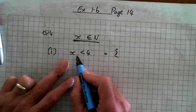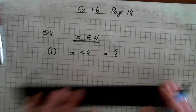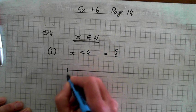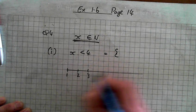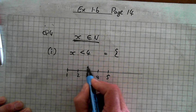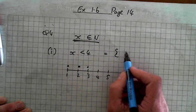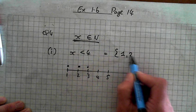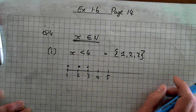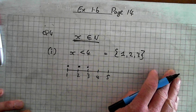We could draw it: 1, 2, 3, 4, 5. What are the answers? X is less than 4. Here's another way of writing the answers: 1, 2, 3 in curly brackets. So that's part I.